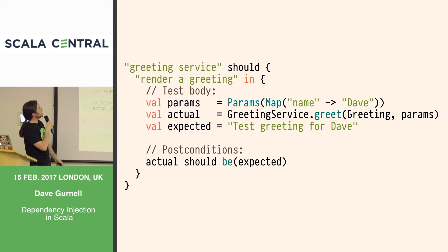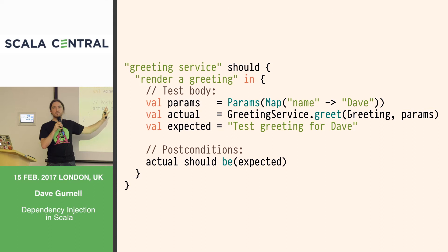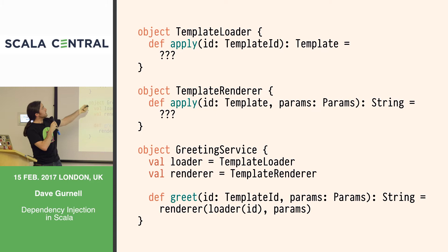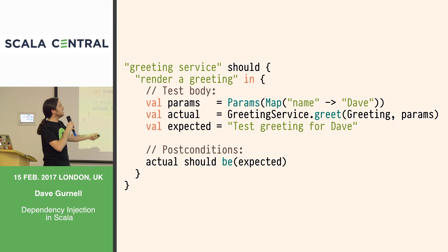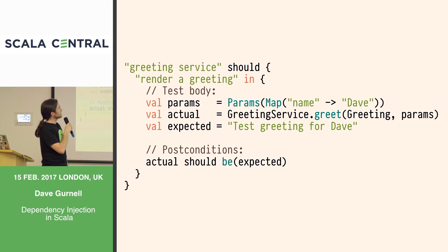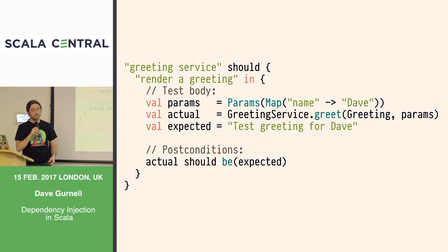So let's think about writing a test for greeting service. We might write a test that takes some parameters, calls the greet method, and checks that the HTML we get out is what we want. The problem with this test is we're using whatever template loader greeting service is using — the same as our production code. If we're loading templates from the internet, our tests immediately depend upon the internet, which is slow and unreliable. So we want a way of swapping out our template loader.